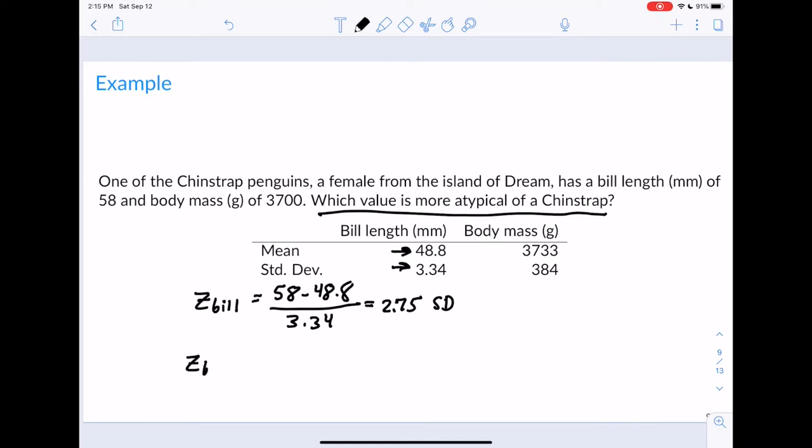Now let's calculate her body mass. We're going to do the same thing. It's very important that you do things in the order of the formula. We're going to take the value, which was 3,700, subtract the mean, which is 3,733, and then divide by the standard deviation, which is 384. That's going to give us a value of negative 0.09 standard deviations. These are the z-scores for the bill length and body mass for this particular female penguin.